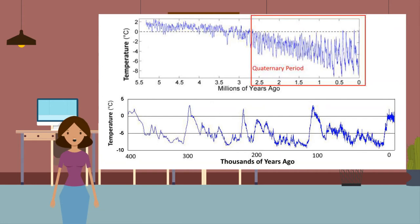Over the last few hundred years our climate has been warming rapidly. Average global air temperatures have risen by 0.85 degrees Celsius since 1880, and the majority of this warming has occurred since the 1970s. This warming is projected to continue throughout the century.